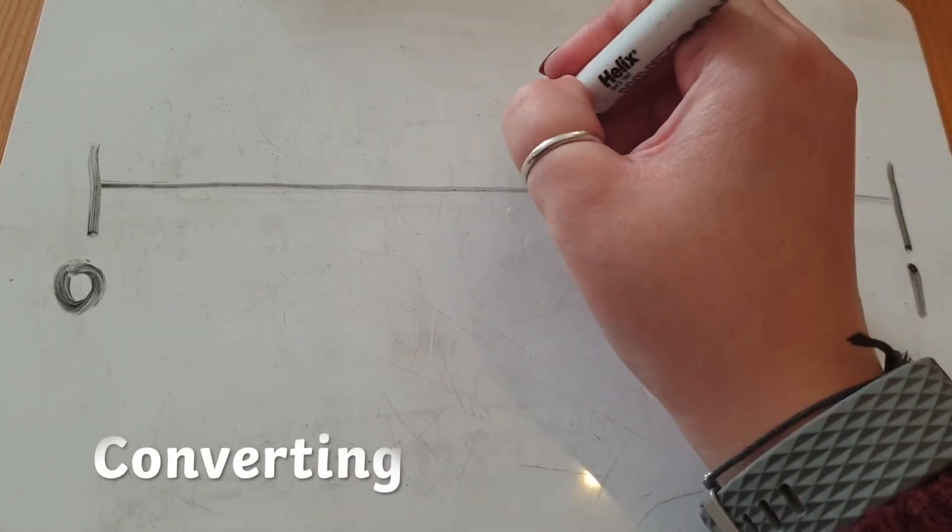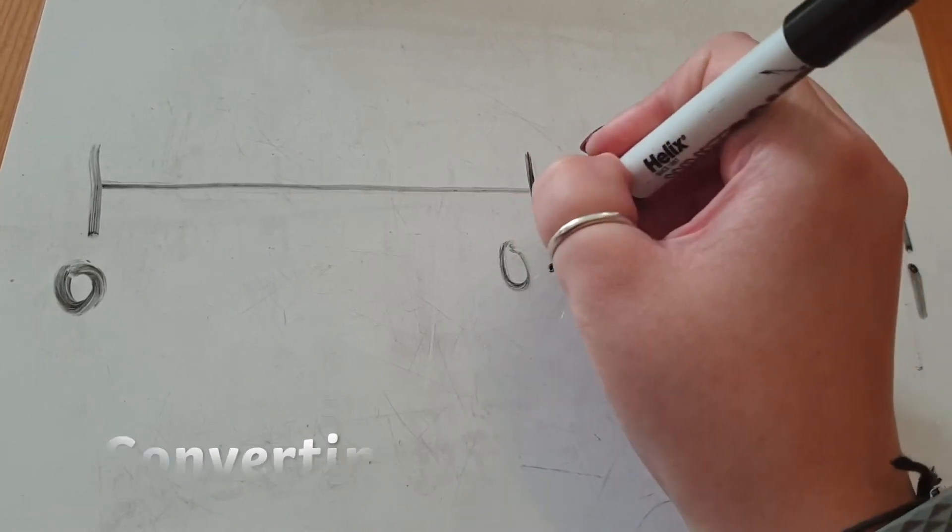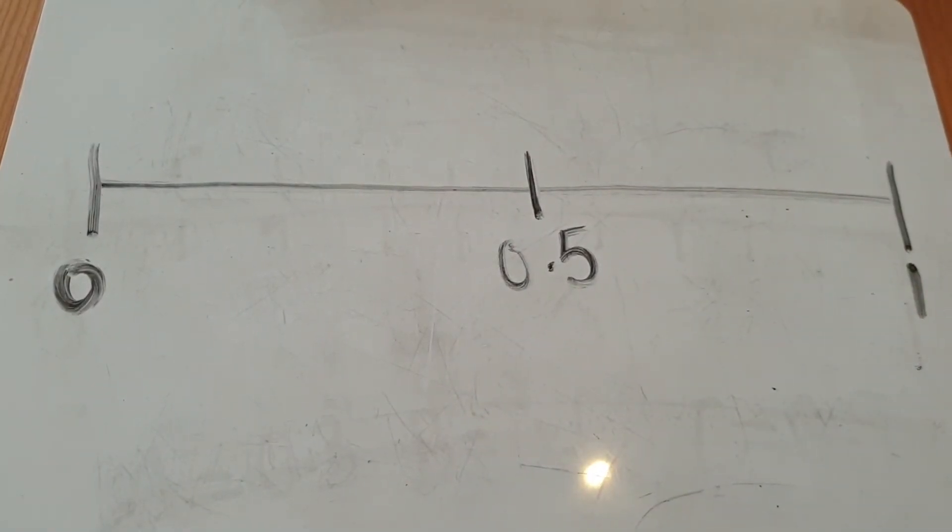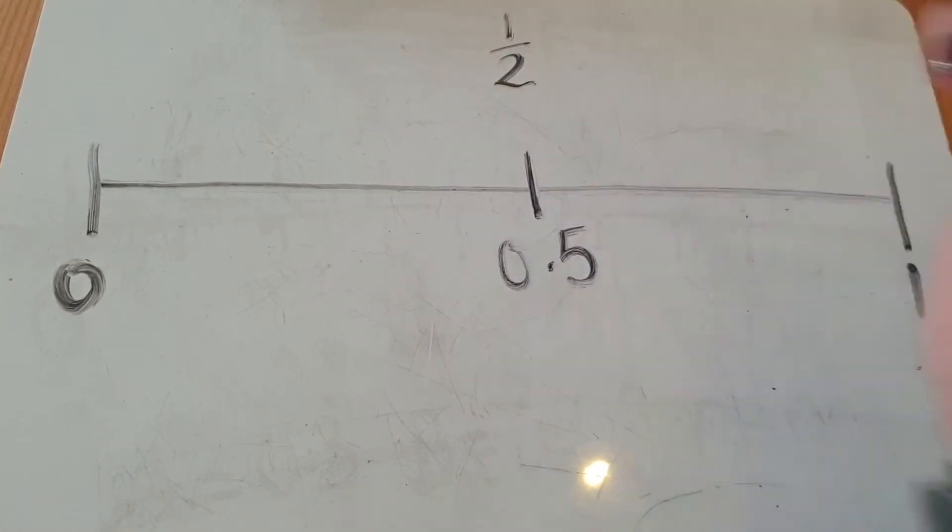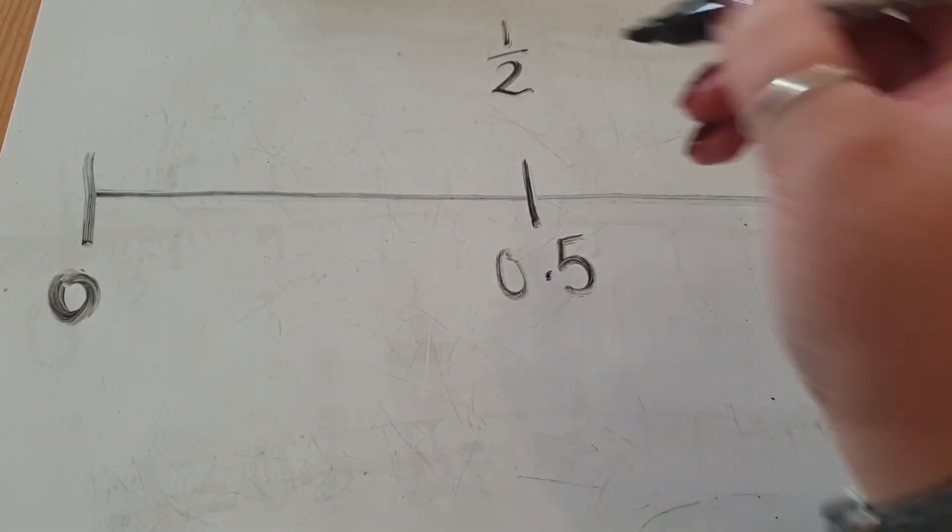For example, 0.5 is in between 0 and 1. Equally, this is a half and 50%.